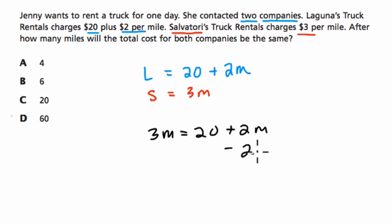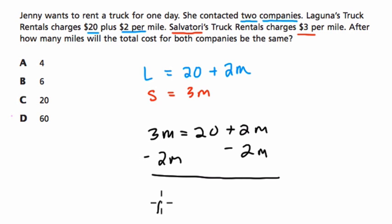So I'm going to subtract 2m from both sides. And we get m equals 20. So at 20 miles the costs will be equal.